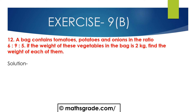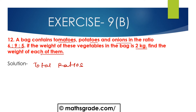Now we will solve Question 12: A bag contains tomatoes, potatoes, and onions in the ratio of 6 is to 9 is to 5. If the total weight of these vegetables in the bag is 2 kg, find the weight of each. The ratio given is 6:9:5. First, find the total ratio: 6 plus 9 plus 5, which equals 20.